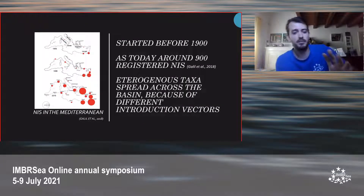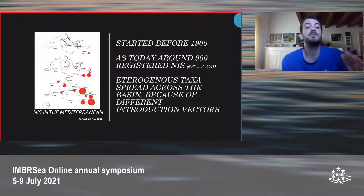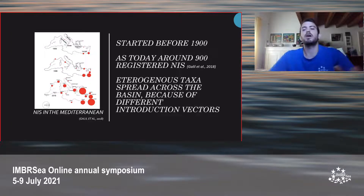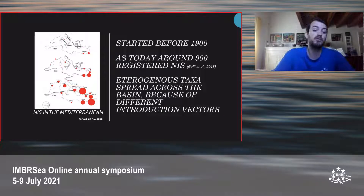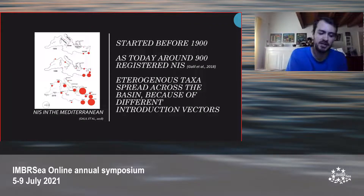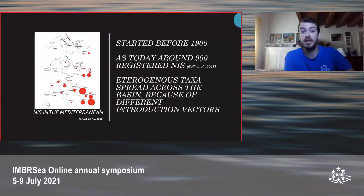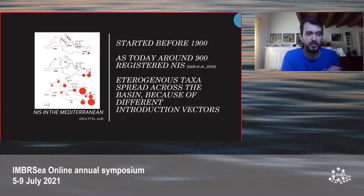Here you can see the situation in the Mediterranean, which is the most invaded sea in the world and also has the most boat traffic. The invasion started even before the 1900s and today we count around 900 registered NIS, which could be even more due to the cryptogenic phase of species. There is a cryptogenic category — species that don't fall into the two categories of native or NIS because we don't know their origin, such as the Bryozoan I was talking about.